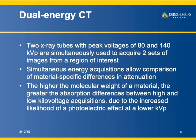A quick review: Dual Energy CT can be done with either two x-ray tubes or a single x-ray tube. The Siemens scanner uses two x-ray tubes; GE uses one. We're doing 80 and 140 kVP simultaneously, or in newer scanners 80 and 150. You acquire two sets of images from the region of interest — simultaneous energy acquisitions allowing comparison of material-specific differences in attenuation. The higher the molecular weight of a material, the greater the absorption differences between high and low kVP acquisitions, due to the increased likelihood of a photoelectric effect at lower kVP.